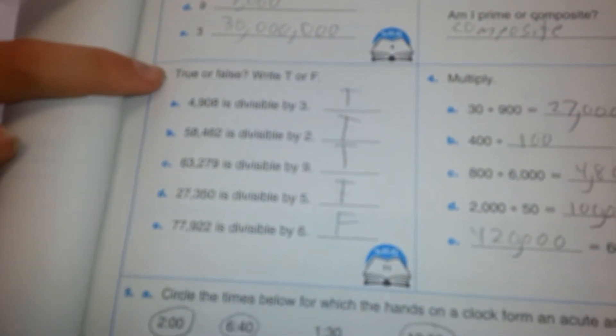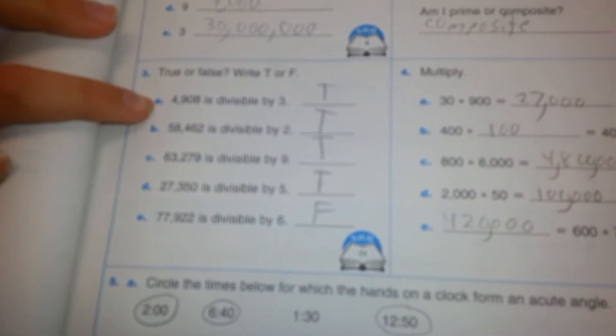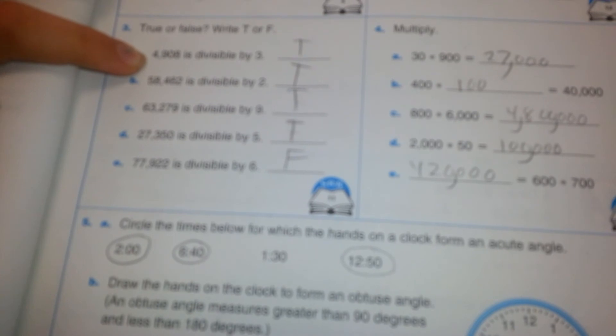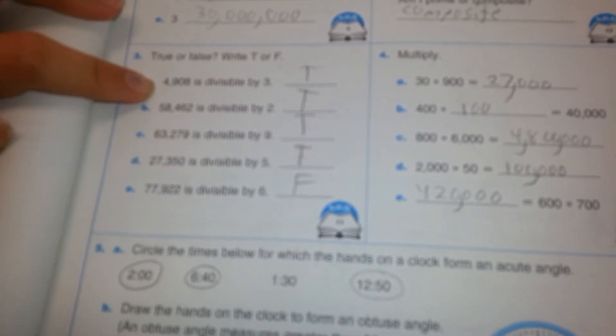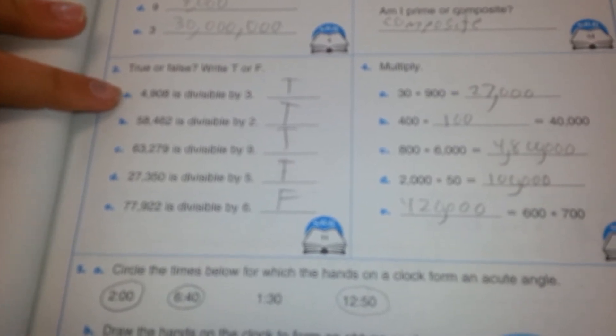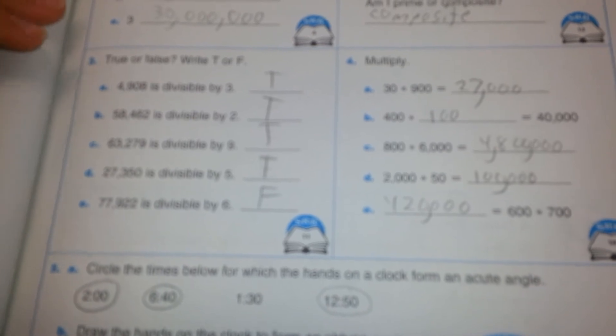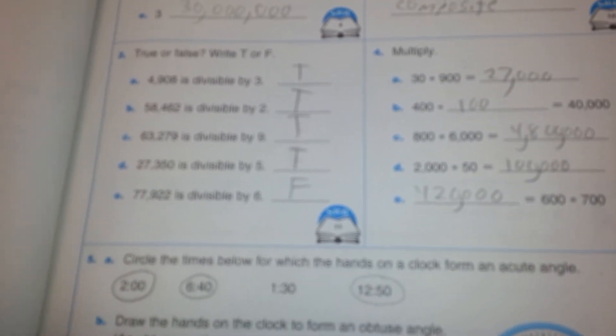Is it really for you? It says true or false. Right, T or F for true or false. It says 4,908 is divisible by 3. And the answer, the whole thing, is 21. If you add them all up, it equals 21.